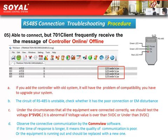Third, under circumstances where all equipment is connected correctly, test the voltage — it should be 3 to 5 volts DC. It is abnormal if the voltage is over 5 volts DC or under 3 volts DC. Fourth, observe the connection communication using the COMFIL software. If the response time is too long, it means the quality of communication is poor, or the equipment is worn out and should be replaced with a new one.